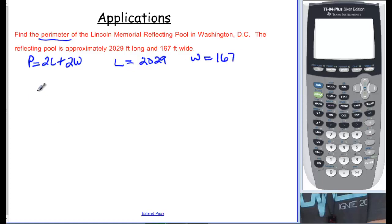So now we just really have to plug and check. We want to find the perimeter. And it's 2 times the length, 2,029, plus 2 times the width, 167. And I'm going to use my calculator over here. So 2, exactly like I see it, parenthesis, 2,029, close my parenthesis, plus, and then again parenthesis - my fault, let me go back over here - 2, parenthesis, 167, close the parenthesis, and enter.